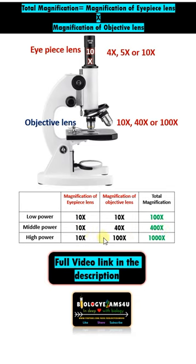If you are using high power, 10x into 100x, that means the object is 1000 times magnified. So total magnification is simply the magnification of the eyepiece lens multiplied by the magnification of the objective lens.